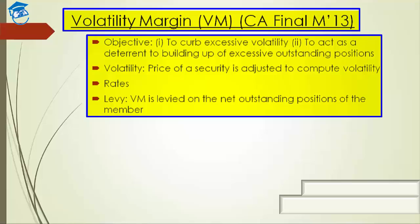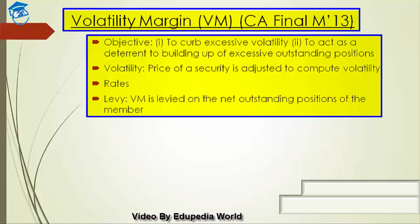Ad hoc margin is collected where the margin cover — the exposure of the member — is felt to be inadequate, so an additional margin is needed; or where the member has a concentrated position in some securities; or where a member has common clients along with other members. So to summarize all the different margins: one — gross exposure margin; two — mark to market margin; three — volatility margin; four — additional volatility margin; five — special margin; and six — ad hoc margin.